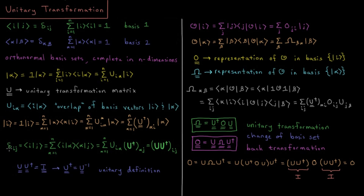So the Kronecker delta is equal to the elements of our transformation matrix times its adjoint. The Kronecker delta is the definition of an identity matrix in terms of its elements — 1 on the diagonal where i equals j, and 0 otherwise. This means the product of our matrix times its adjoint equals an identity matrix, so the adjoint equals the inverse, confirming this must be a unitary matrix. To transform from one basis set to another, we need a unitary matrix whose elements are the overlaps of the basis vectors between the two sets, giving us an n×n unitary matrix.